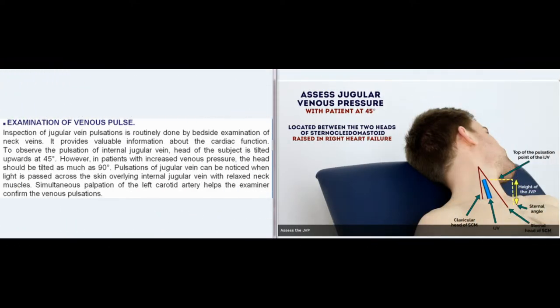Examination of venous pulse: Inspection of jugular vein pulsations is routinely done by bedside examination of neck veins. It provides valuable information about the cardiac function. To observe the pulsation of internal jugular vein, head of the subject is tilted upwards at 45 degrees.